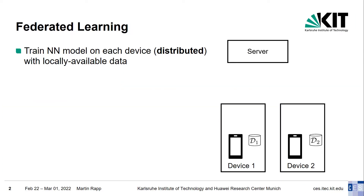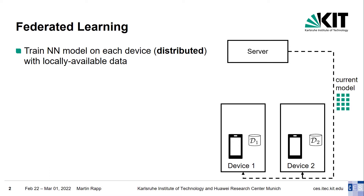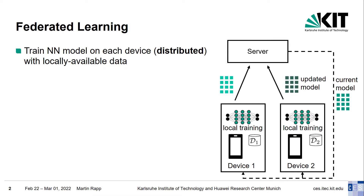Federated Learning performs distributed training of a neural network model on many devices where each device holds local private training data. In addition to the devices, the Federated Learning system comprises also a server that enables cooperative learning among all devices. Synchronous Federated Learning operates in so-called rounds, where at the beginning of each round the server distributes the current model — more specifically the parameters — to all devices. Then each device performs local training with its own local data. After training, each device reports back to the server an updated model with parameter changes. The server aggregates all received updates by weighted averaging and starts the next round. This is repeated until convergence.